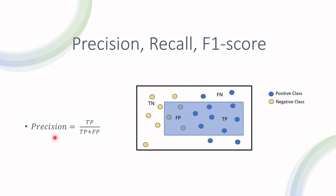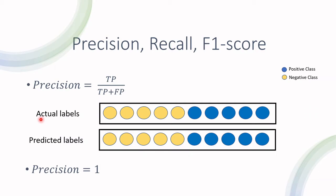Precision is defined as true positives — anything the model predicted correctly as true — divided by true positives and falsely predicted positives from the negative class. For example, if everything is predicted correctly, there are five true positives and no false positives, so the precision is equal to one. In another example with three correct true positives and no false positives, even though two instances are incorrectly classified, the precision is still equal to one.